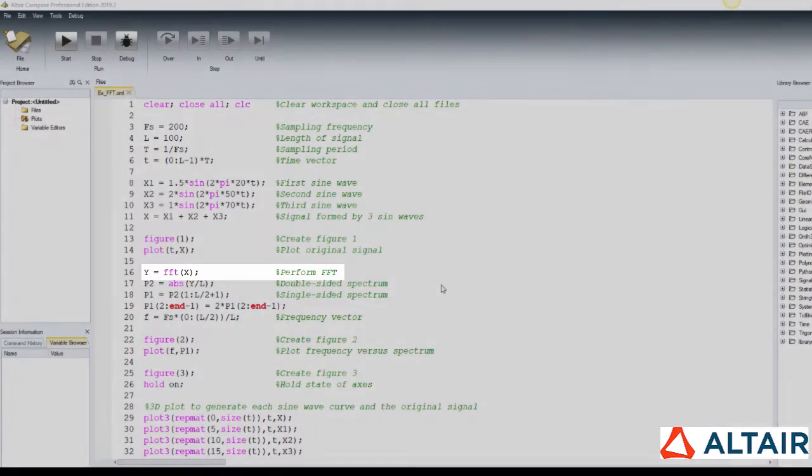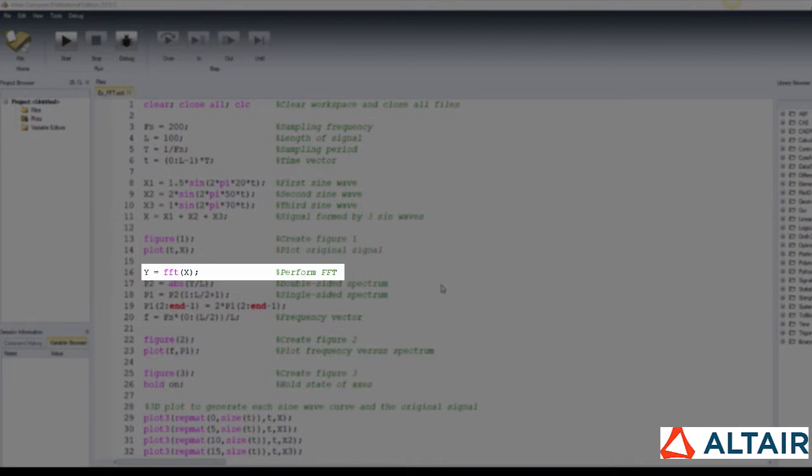The function FFT gives the frequency domain representation of the input signal. And some other arguments may be given, such as the size of the FFT, which is the length of the input vector as default, and the dimension on which to operate.